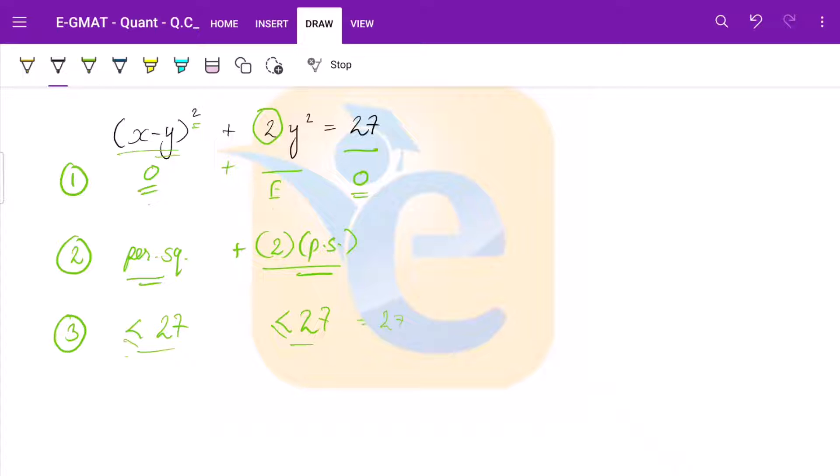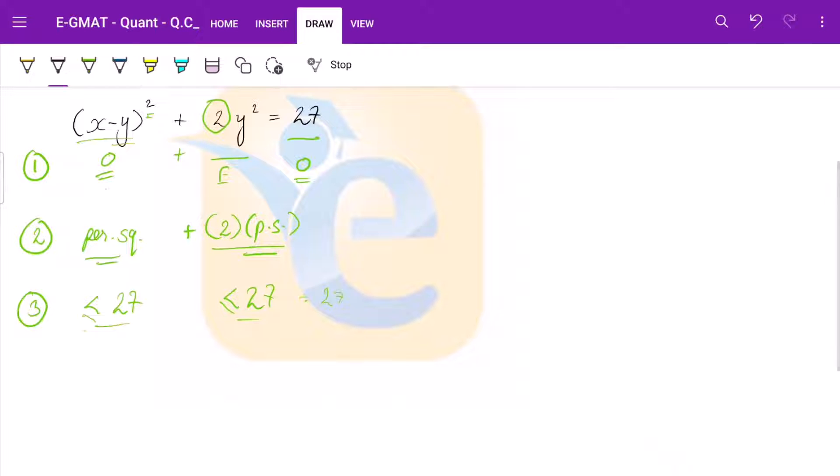Now let us try and reach some conclusion via these inferences. So a perfect square less than 27 and this should be an odd number. So an odd perfect square less than 27. What options do we have?